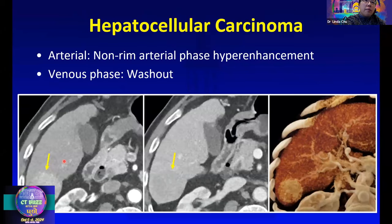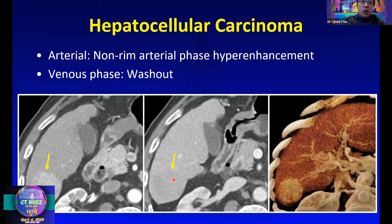Here's a classic example of a hepatocellular carcinoma. You can appreciate arterial phase hyper-enhancement of this mass in the nodular liver — an enhancing mass in the cirrhotic liver should always raise concern for HCC. On the venous phase images, you can appreciate subtle washout, because the mass is now enhancing less than the background liver. The cinematic images help accentuate the conspicuity of the mass, which was not that obvious on routine images.